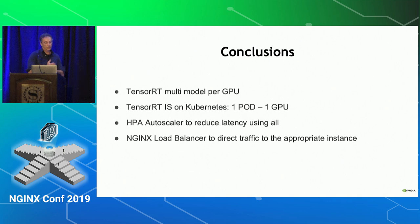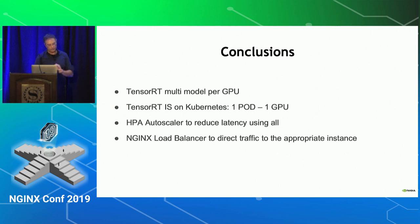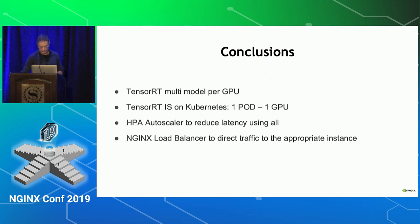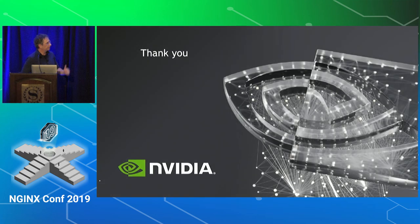What I showed today was running TensorRT with multi-model per GPU, how to install it on Kubernetes — pretty easy, one pod per GPU — the demo with the autoscaler, and how to install and configure the load balancer to work with NGINX Plus with the TensorRT inference server. Thank you.